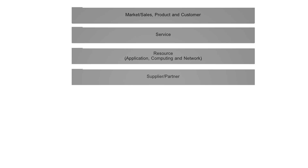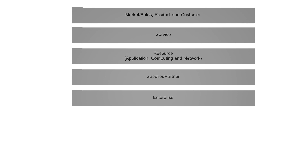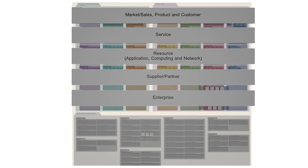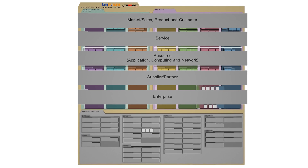Supplier Partner relates to all processes around suppliers, for example SIM suppliers and partners. Enterprise represents the enterprise-wide processes supporting the organisation as a whole.